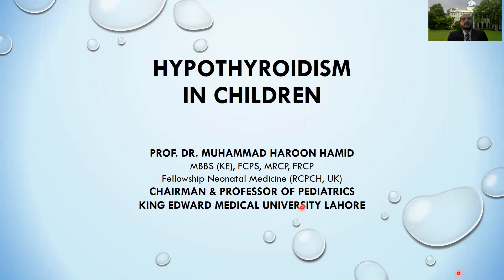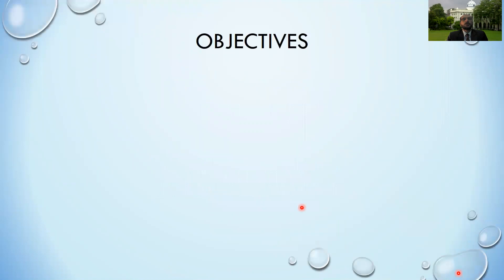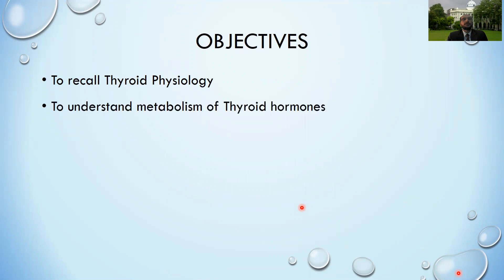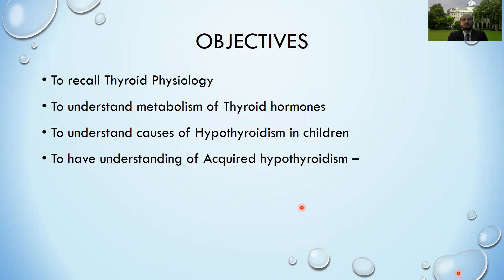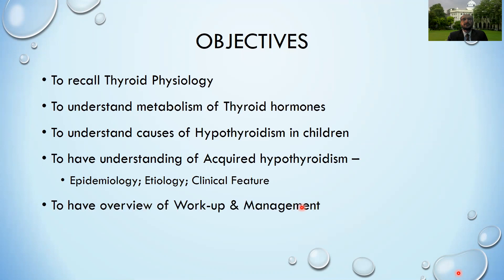In the next couple of lectures we are going to talk about a group of important endocrinopathy in children - hypothyroidism. We are going to recall our knowledge of thyroid physiology, understand the metabolism of thyroid hormones, what causes hypothyroidism in children, the causes of acquired hypothyroidism, its epidemiology, clinical features, how to investigate acquired hypothyroidism, and its management.